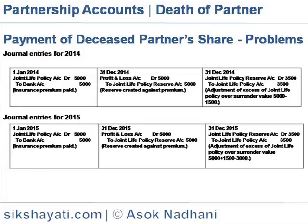Entries for 2014. On 1st January 2014, joint life policy account is debited 5,000 to bank account — insurance premium paid. On 31st December 2014, this is transferred: profit and loss account debited 5,000 to joint life policy reserve account 5,000 — reserve created against premium. On 31st December 2014, joint life policy reserve account is debited and joint life policy account is credited by 3,500. This is the adjustment of excess of joint life policy over surrender value, that is 5,000 minus 1,500.